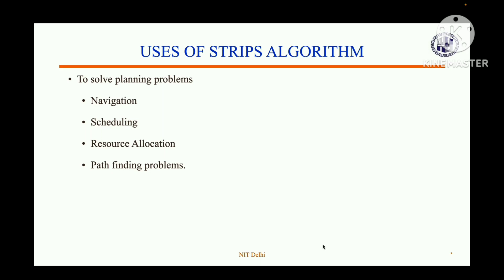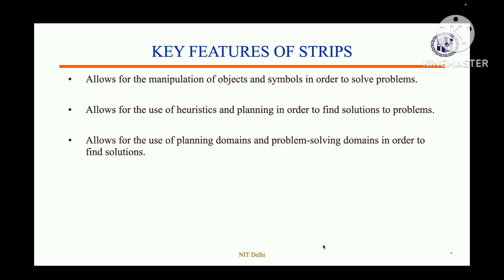Another use is resource allocation — how to allocate a limited number of resources such as materials and equipment. Automated planning, route planning, and path-finding are also examples. Key features of STRIPS include the hierarchical method, solving problems by dividing into multiple sub-problems, manipulation of objects and symbols, use of heuristics, and support for planning domains and problem-solving domains.